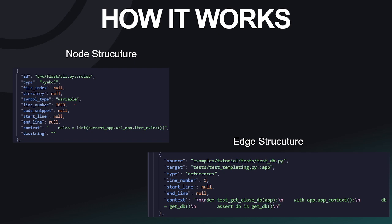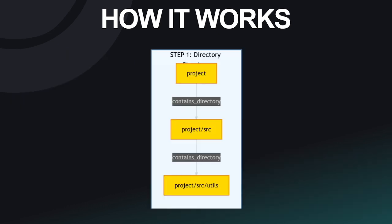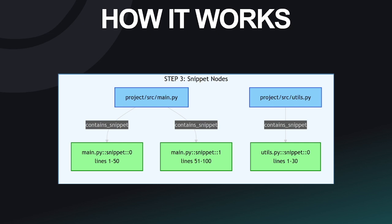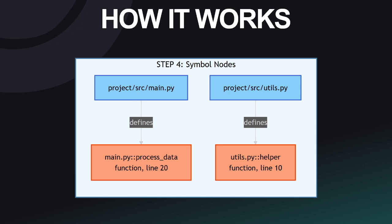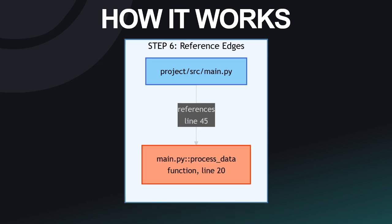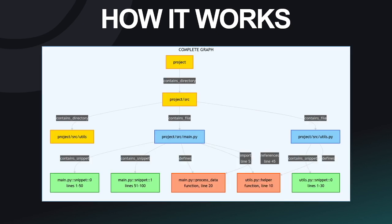Now let us look at how the processing takes place. First, we have the contains directory, which recursively finds and stores the directory and sub-directory information. Within that, there's also contains file, which does the same thing but for files. Then we have contains snippet, which chunks up code into snippets set by arbitrary values needed for efficient chunking. It defines the node schema for each node. The symbol nodes hold code details such as function, class, etc. The import captures import relationships, whereas references captures implicit imports, which is a key feature required.